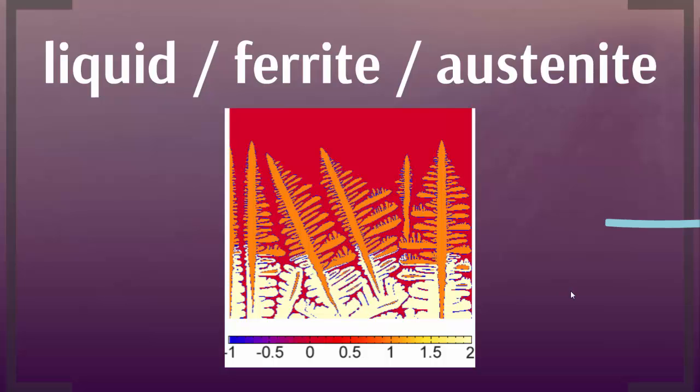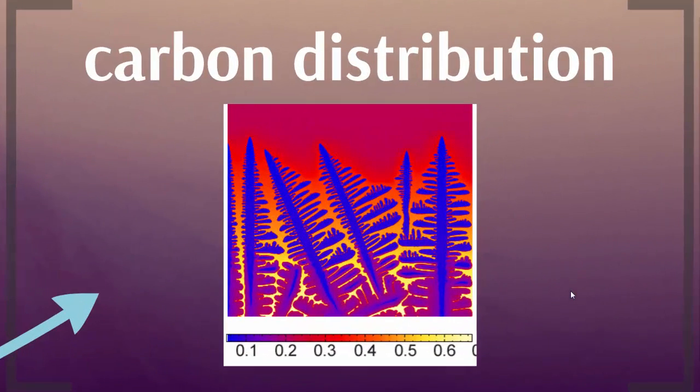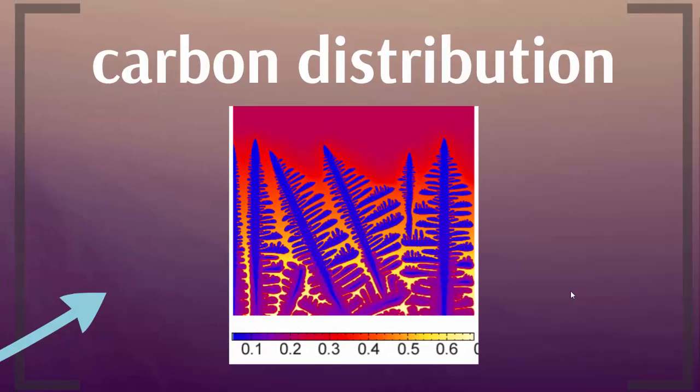And then you can look at these simulations in the light of the different alloy elements. If you look at the carbon distribution, you see that carbon is segregated into the interdendritic liquid, and the manganese as well.